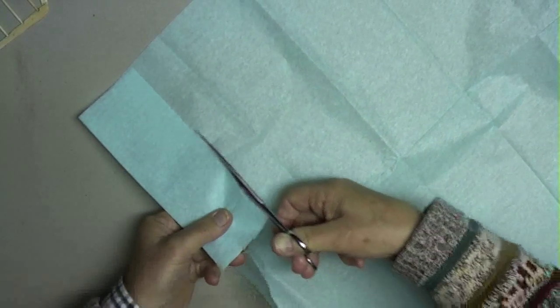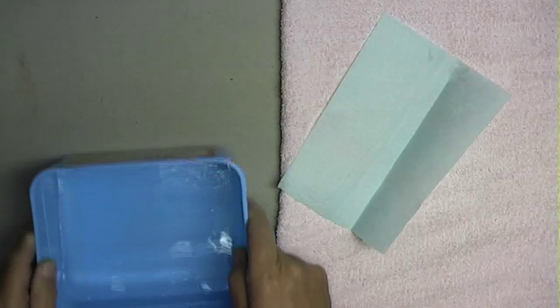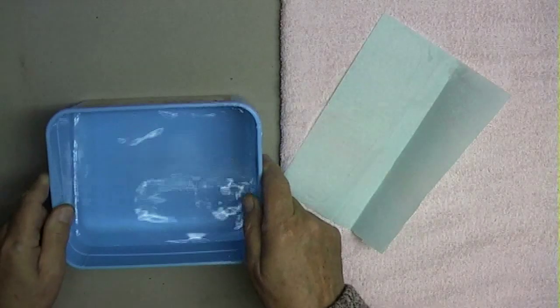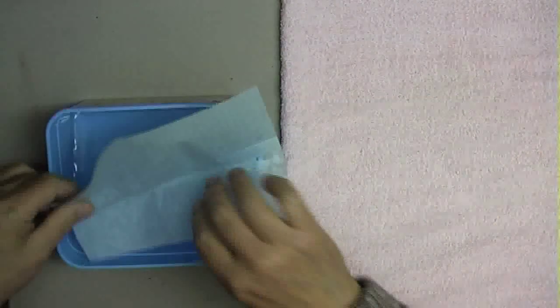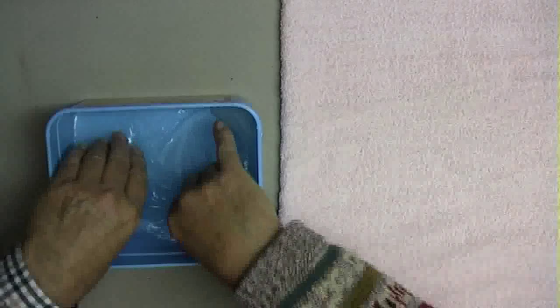This fresh application of dope would set into that already on the balsa frame. When the whole lot dried off, the tissue had shrunk tight and was ready for a final coat of dope.